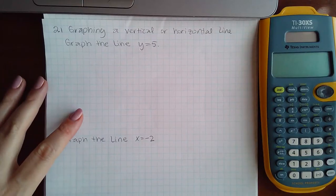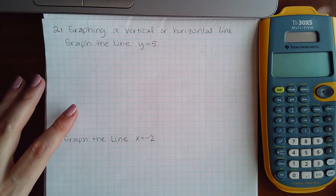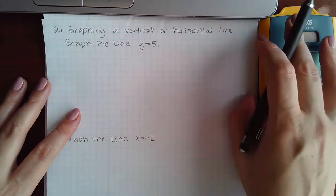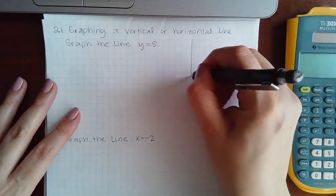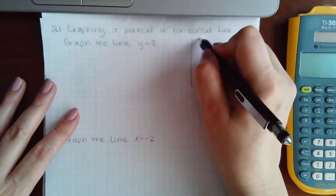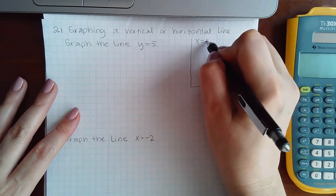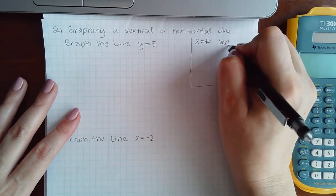So here we're doing 2.1 graphing a vertical or horizontal line. We need to know some information first. If you have the equation x equals a number, that is a vertical line.